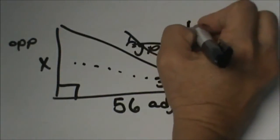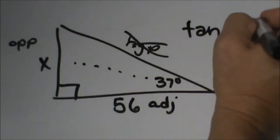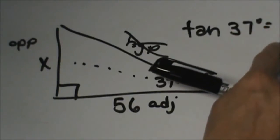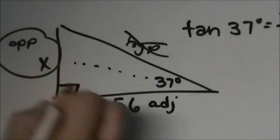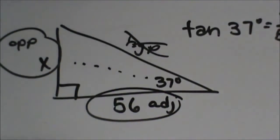So I am going to take the tangent of the angle and the angle is given, 37 degrees, is equal to the ratio of opposite over adjacent. So my x is on top because it is opposite and adjacent is on the bottom because it is given.